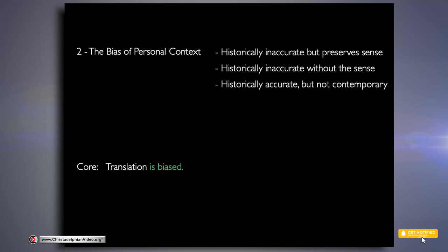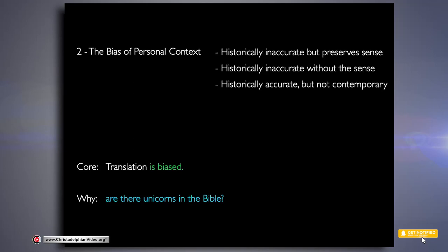Making us aware of what that bias looks like is the reason for a class like this. Here's a question: why are there unicorns in the Bible? It's interesting — they don't just show up in one place, they're actually in a number of passages. Why are they there? What's going on with these unicorns? Why did they end up in the translation?